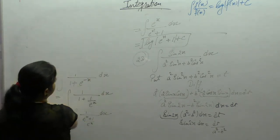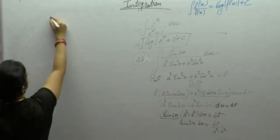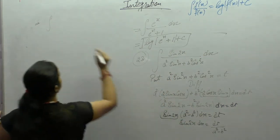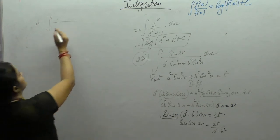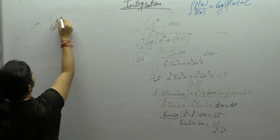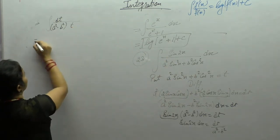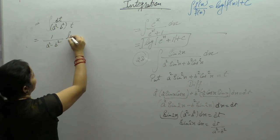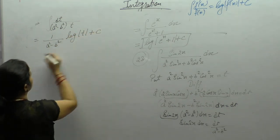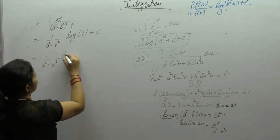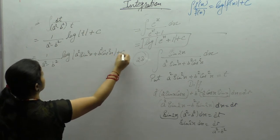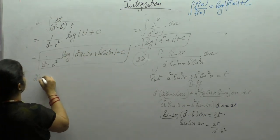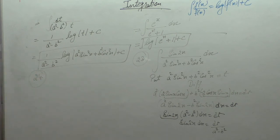Substituting back, the final answer is (1/(a²-b²))·log|a²sin²x + b²cos²x| + C.